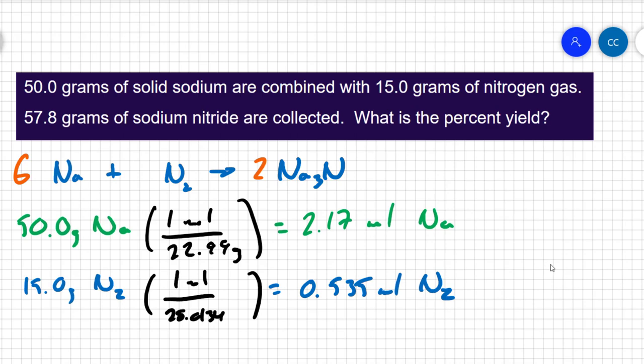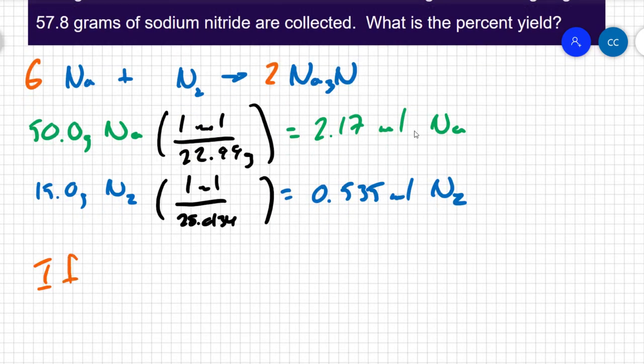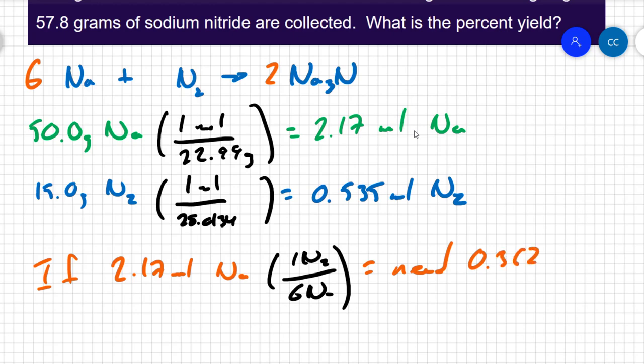I've written a balanced equation. I've converted the moles. Now I have to figure out which one of my two reactants is the limiting reactant. I like to do that if-then statement. It doesn't matter which reactant you choose. Let's take the sodium because I have it written first. So if I have 2.17 moles of sodium, then the ratio between the nitrogen and sodium is that there is one nitrogen for every six sodiums. So that means you need 0.362 moles of nitrogen. Well, I have more than 0.362 moles of nitrogen. I've got 0.535, so that tells me I have an excess of nitrogen, which means the sodium has to be my limiting reactant.